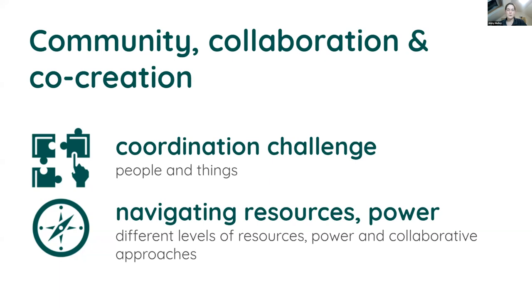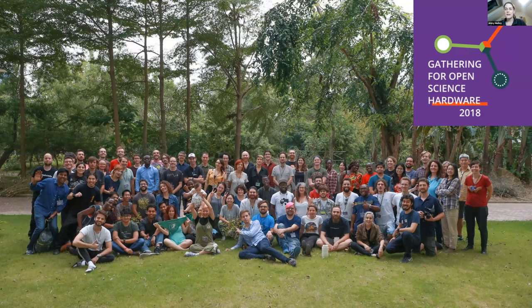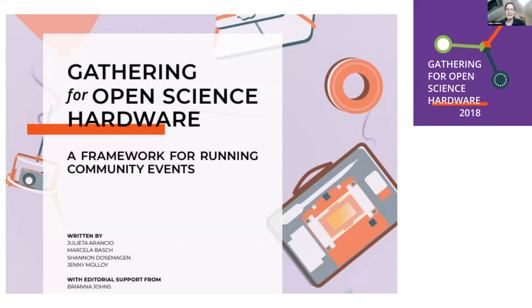The second thing is navigating different levels of resources and power. How to better work with partners where there is clearly a resource imbalance and potentially also a power imbalance — that's something we've been very mindful and intentional about in the Gathering for Open Science Hardware. This is a community that's been meeting in person since 2016. We also have a forum online with around 800 members. The last global gathering we held was in Shenzhen, China in 2018, featuring people from at least 40 countries. We've produced a framework for running community events that tries to capture what's special about working in person with hardware.